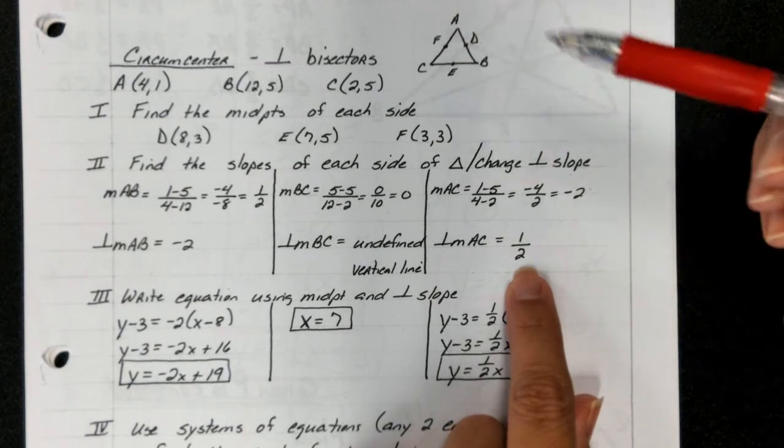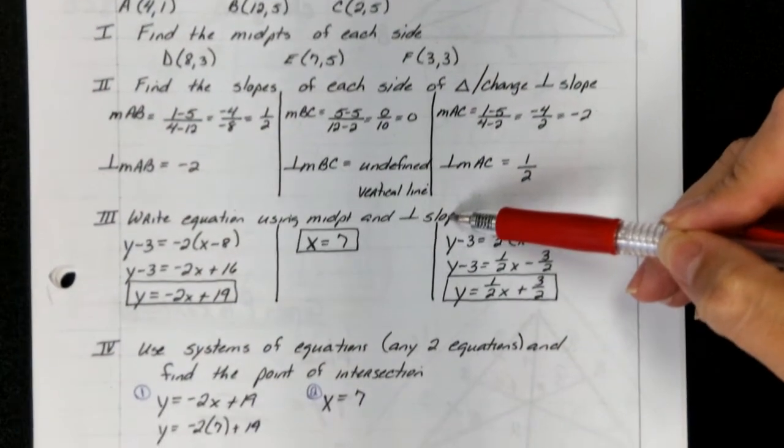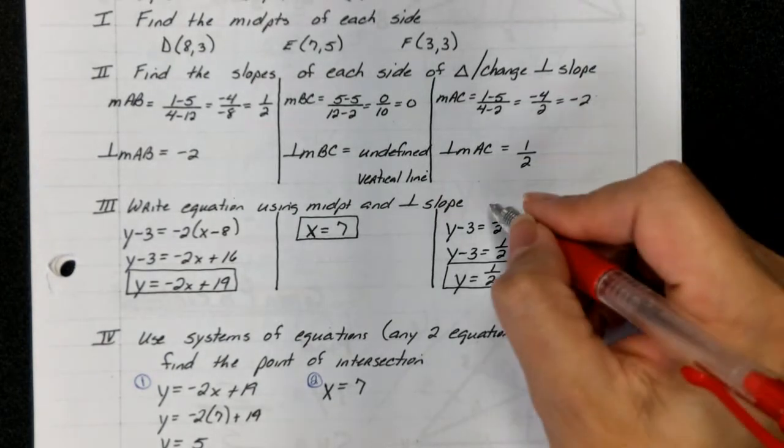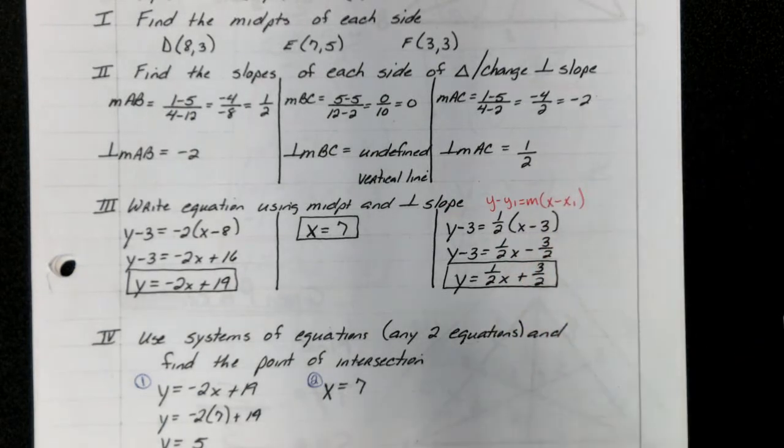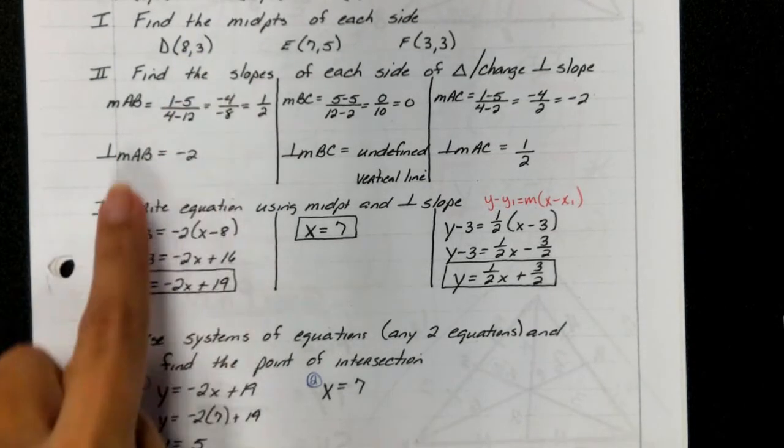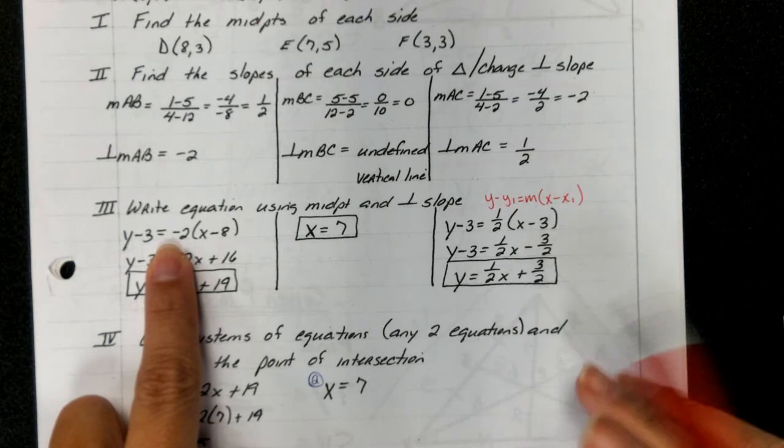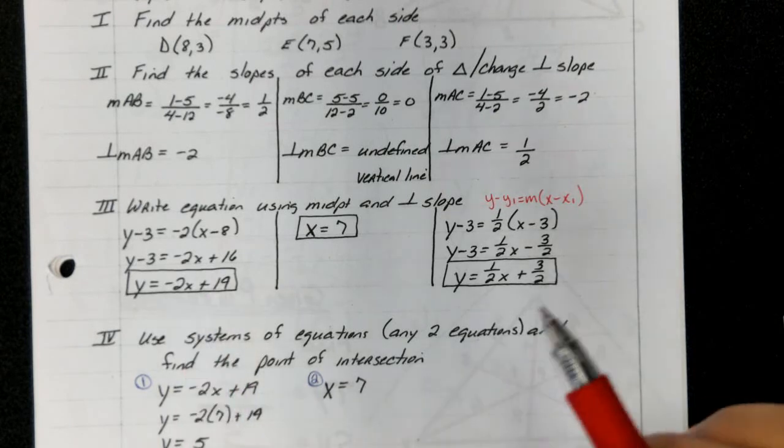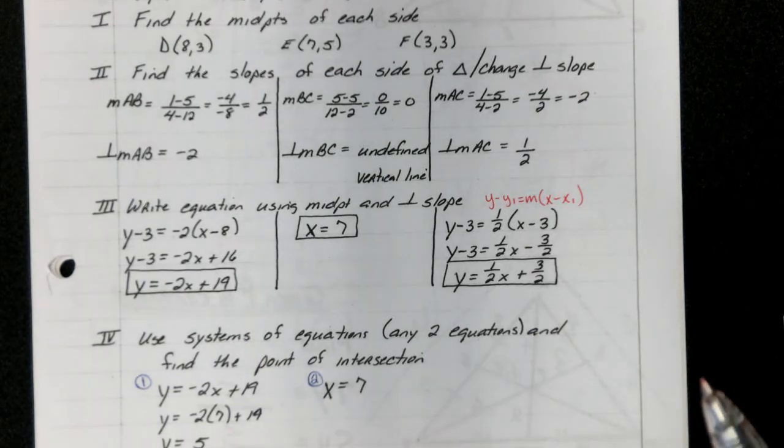Now you're going to take those slopes and those midpoints and write an equation using midpoint and perpendicular slope. So guys, use your y minus y1 equals m times x minus x1. We're going to plug in our midpoint and our perpendicular slope: y minus 3 equals negative 2 times x minus 8, and get your equation into slope-intercept form. At any point in this video, if you need to stop and go back to see where I'm getting a particular number from, by all means please do so.